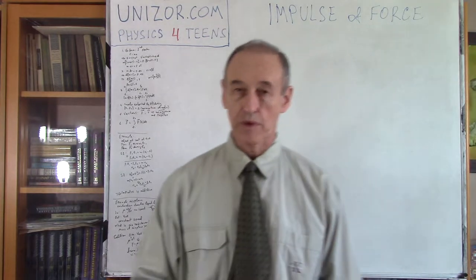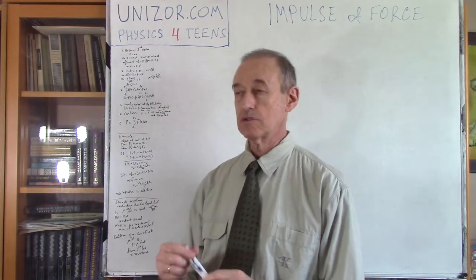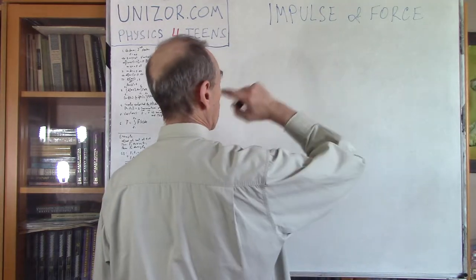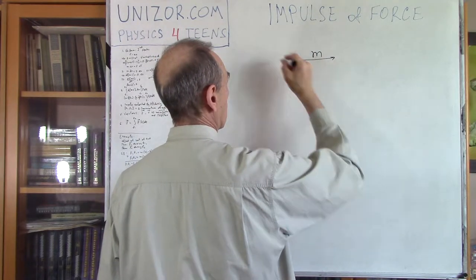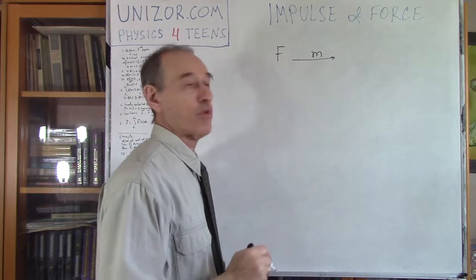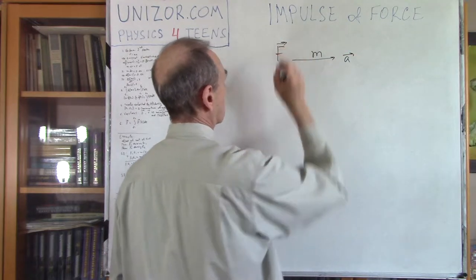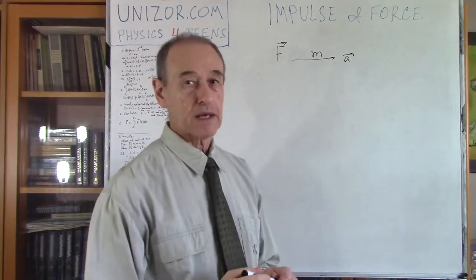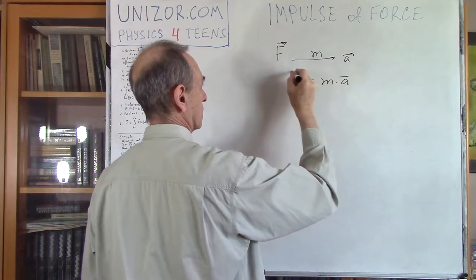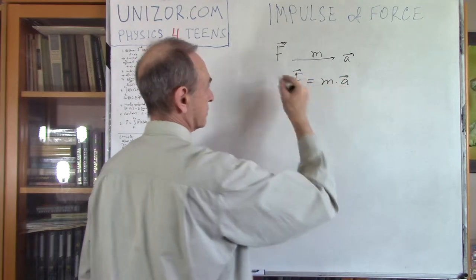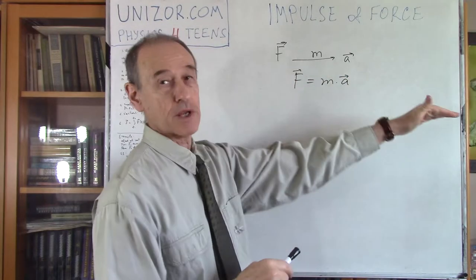So back to impulse of the force. Let's consider a very simple situation when you have a uniform motion of an object of mass M under a certain constant force F, which gives it an acceleration A. From the second Newton's law, we know F equals M times A. I'm using vectors, but whenever it's uniform motion it doesn't really matter because it's only one-dimensional anyway.